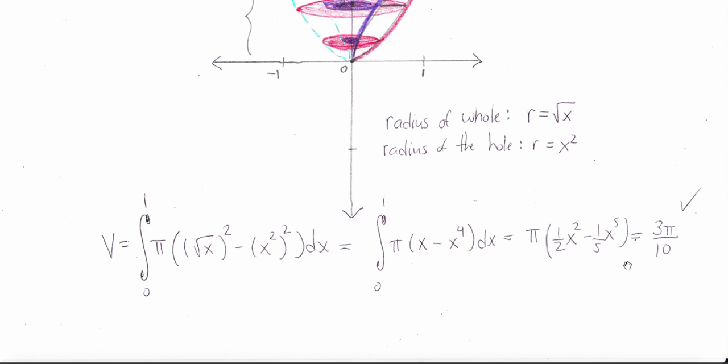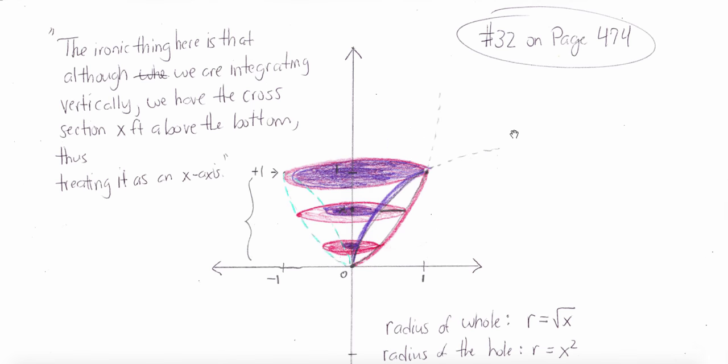Evaluated—I didn't draw the evaluation bar from 0 to 1—and that gives me 3 pi over 10. So the volume of the solid generated is 3 pi over 10.